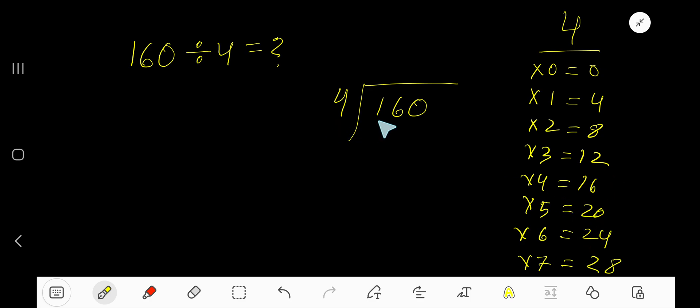4 goes into 1 how many times? 0 times, as 1 is less than 4. So 0 times 4 is 0. Subtract, then bring down the next digit to get 16. 4 goes into 16 how many times? 4 times. 4 times 4 is 16. Subtract to get 0.